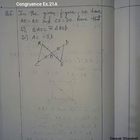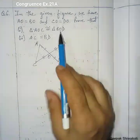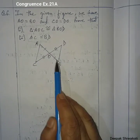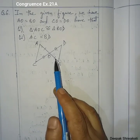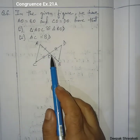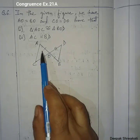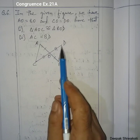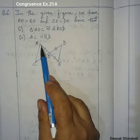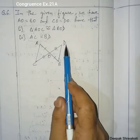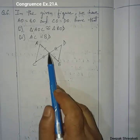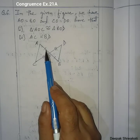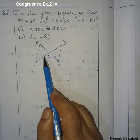Question Number 6: In the given figure, AO is equals to BO and CO is equals to DO. We have to prove that triangle AOC is congruent to triangle BOD and that AC is equals to BD. We look carefully at these two triangles — these two sides are equal and these two sides are equal.